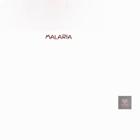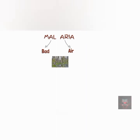Malaria can be broken down into 'mal' meaning bad and 'aria' meaning air. This is because people who came down with malaria at the time it was first described were believed to live near swamps. Malaria is a preventable and curable infection transmitted by the female Anopheles mosquito.